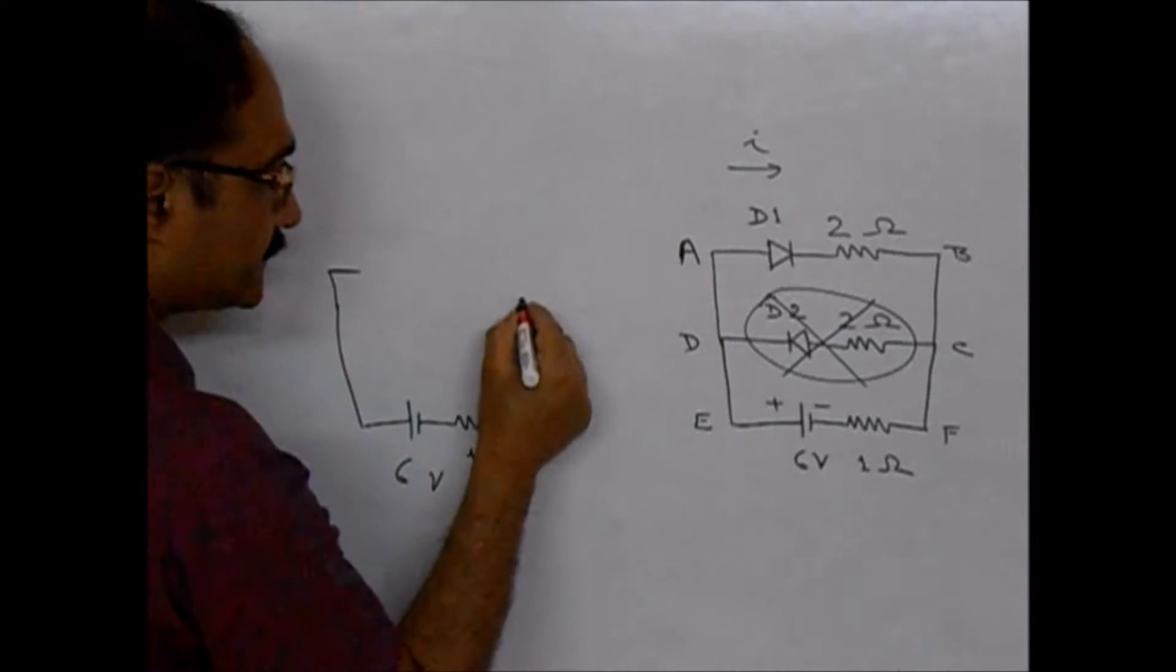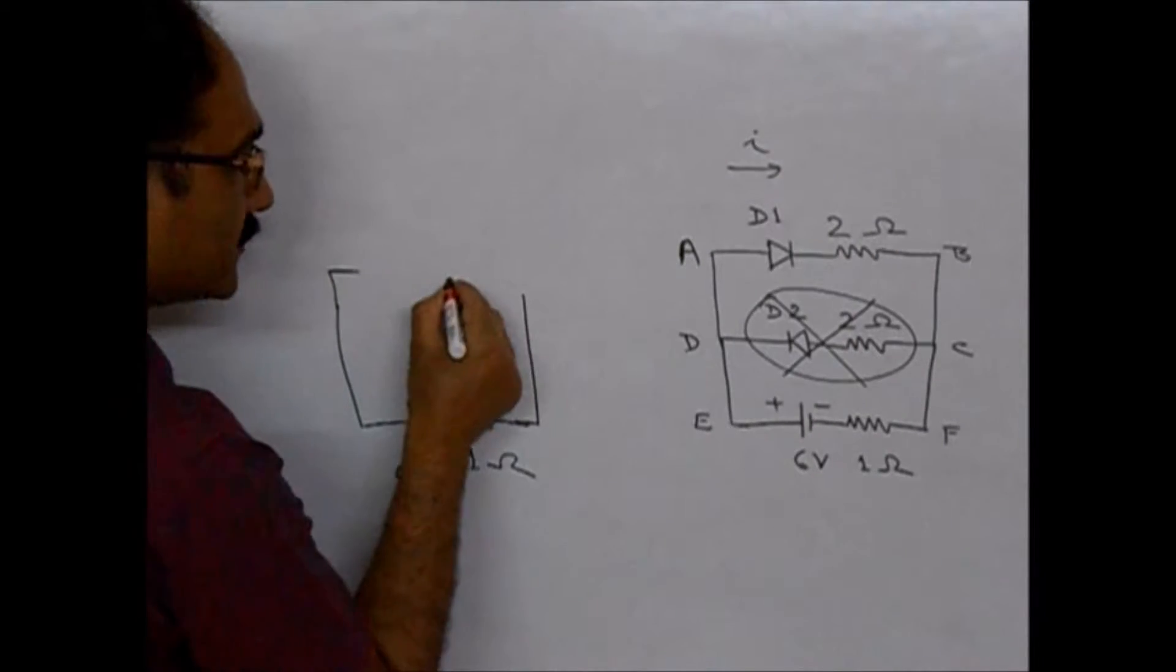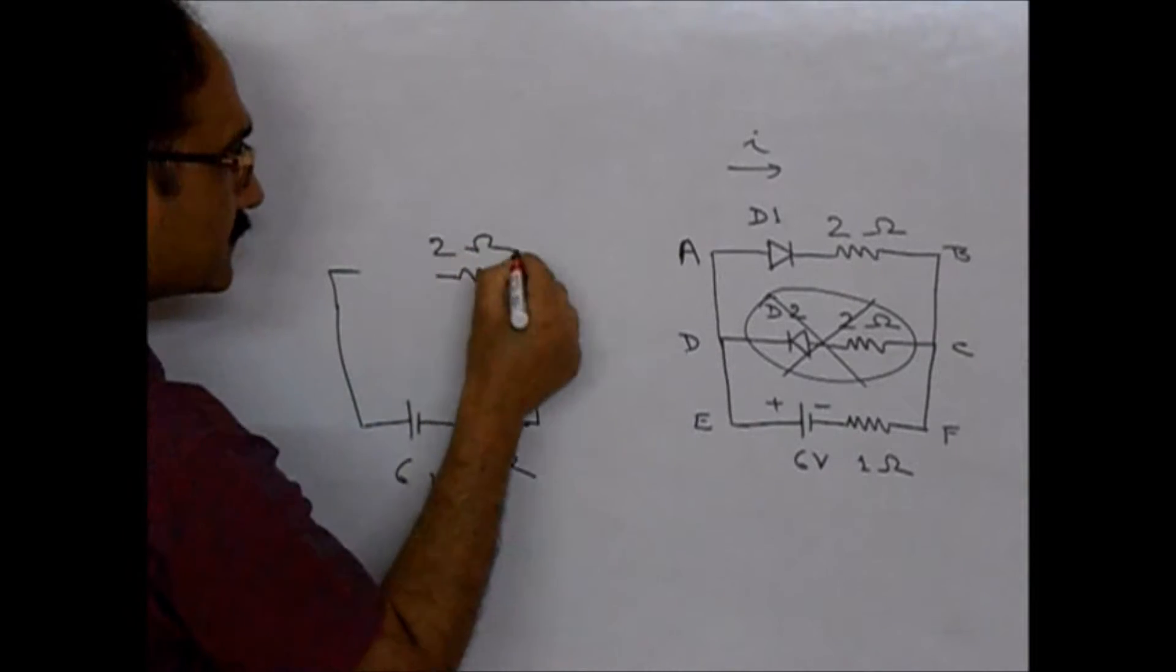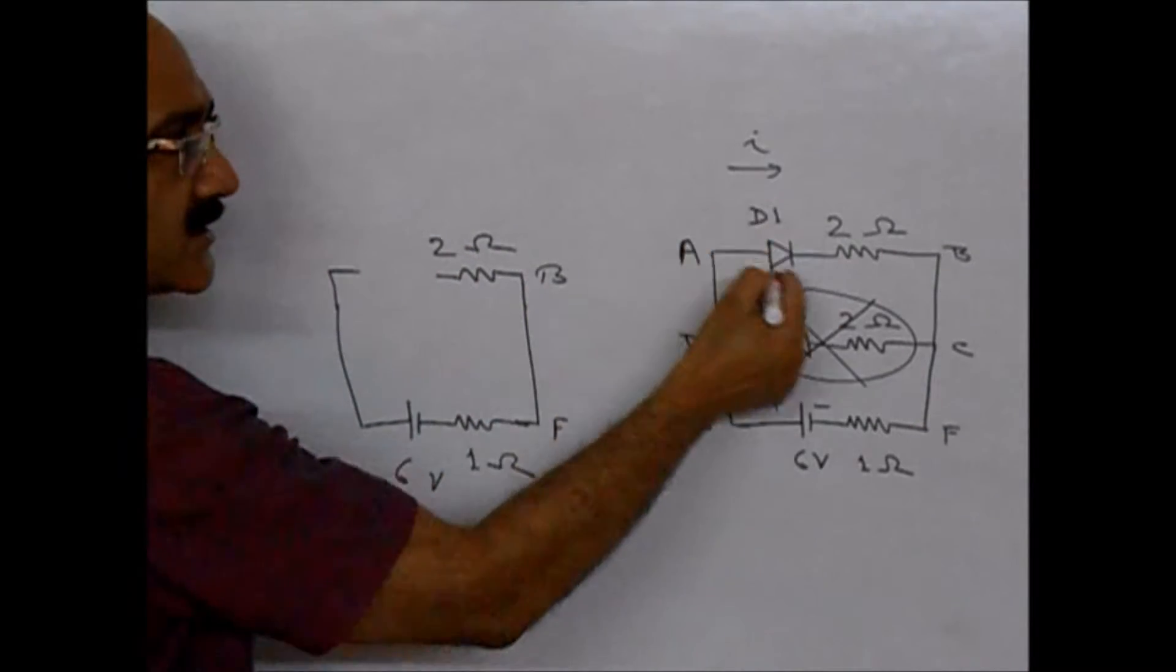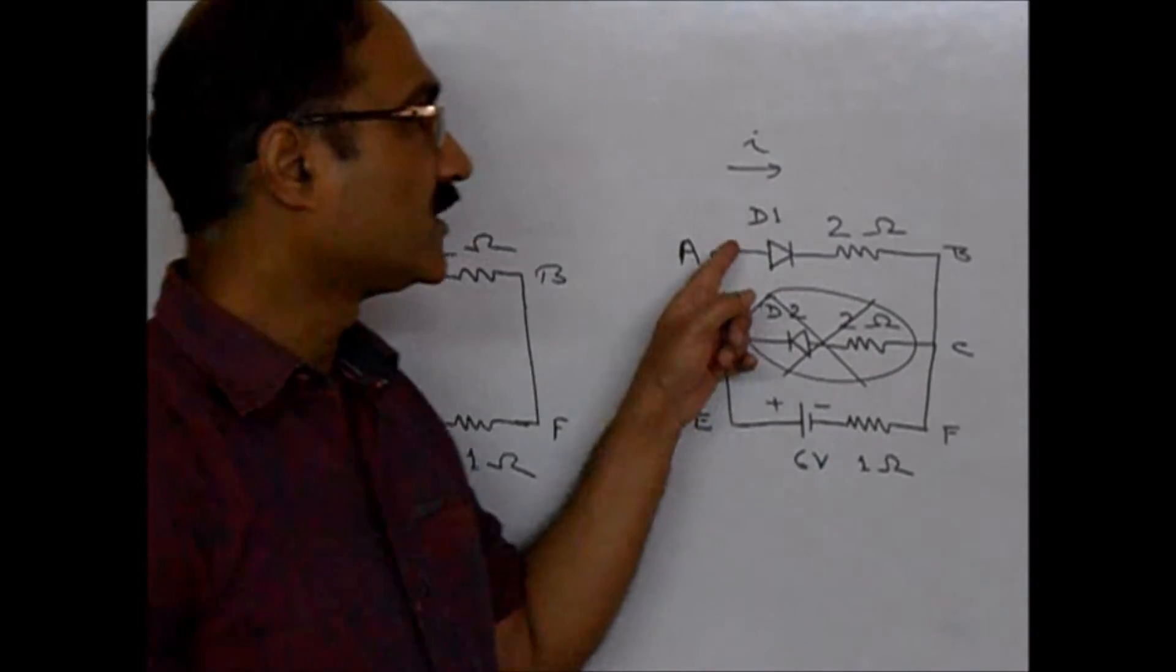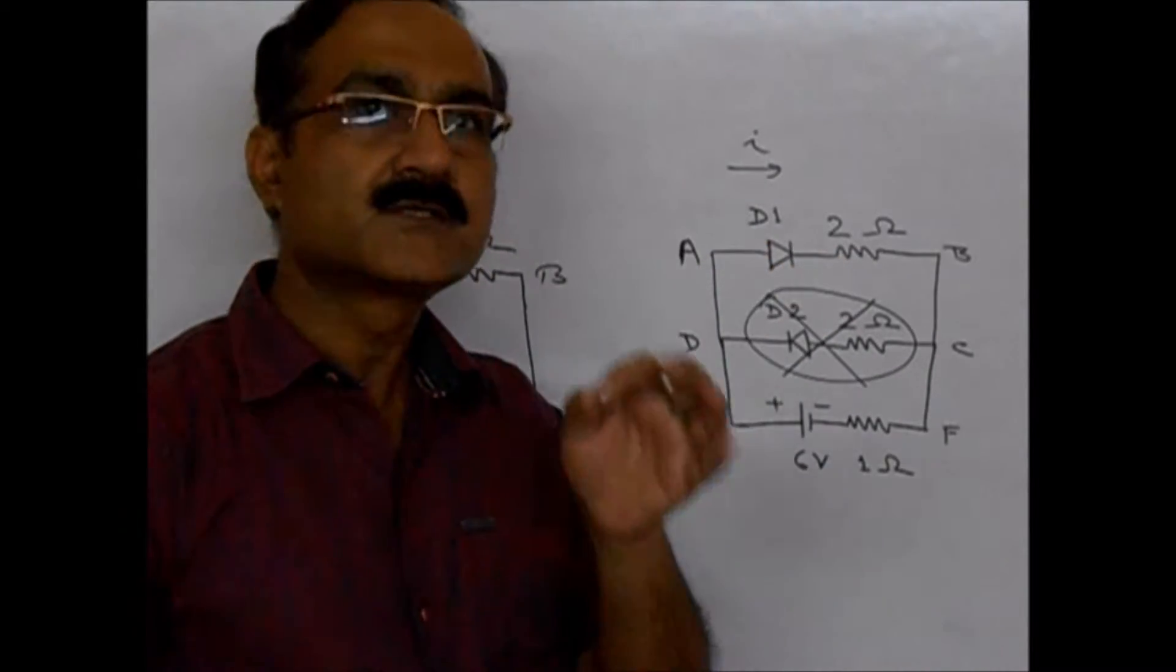Now here, this 2-ohm resistor is there. This is B. This is F. Now since diode will be conducting, the resistance of this diode will be 0.